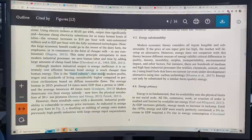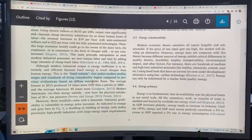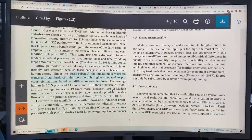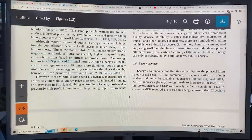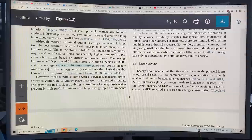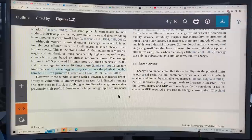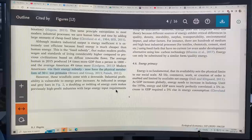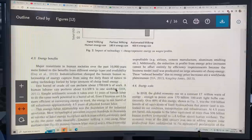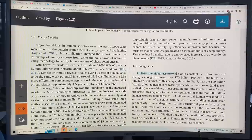Modern industrial output is energy inefficient. It's extremely cost effective because fossil energy is much cheaper than human energy. This is the fossil subsidy that makes modern profits, wages and standards of living considerably higher compared to previous civilizations based on diffuse renewable flows and human labor. The average human in 2015 produced 14 times more GDP than a person in 1800. The average American 49 times more. Modern Americans via their energy subsidy now have the physical metabolism of 30 plus ton primates. But when energy costs go up, the whole system breaks down. And this is what is happening.